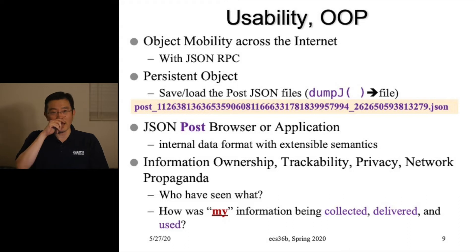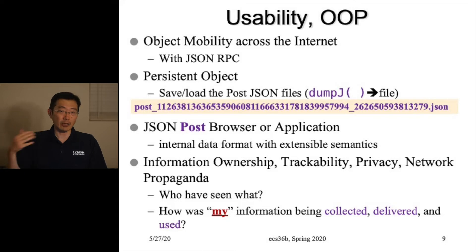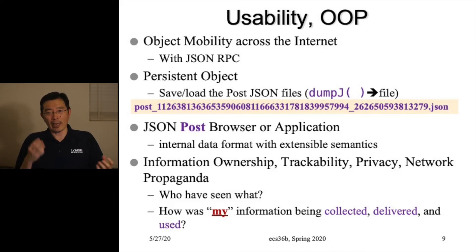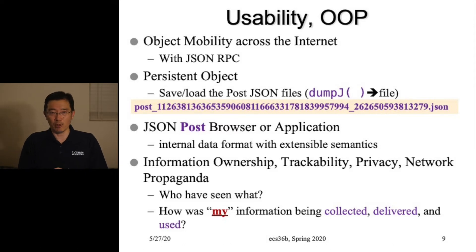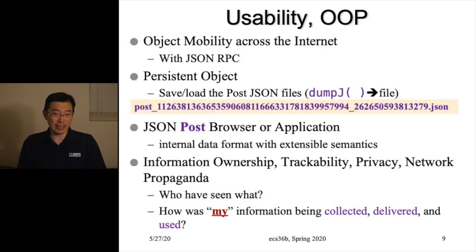The server in New York receives the JSON and calls `json_to_post`, giving it a pointer to the post so it can interact. Essentially I'm duplicating or moving the object from one location to another. If you learn to do this conversion from any object to JSON format, you can apply it to any object-oriented programming language — C++, Java, or Python. That's object mobility.